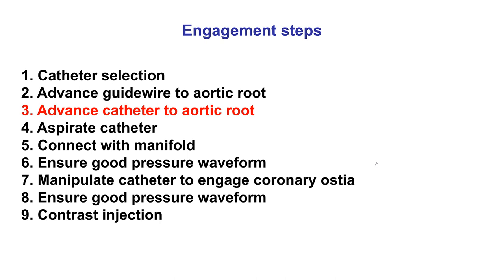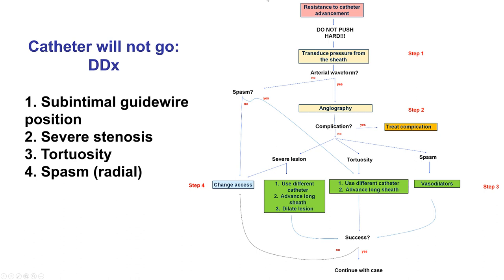Moving on to the next step: getting the catheter to the aortic root. The concept is very similar — never push hard to avoid complications. Instead, transduce the pressure from the sheath, advance the catheter, perform angiography, and understand the underlying problem. If there is severe lesion or occlusion, the axis may need to be changed. Often, different wires and catheters can cross the severe lesion. If there is tortuosity, various wires, catheters, or long sheaths can be used. If there is spasm for radial axis, vasodilators can be used.